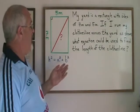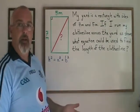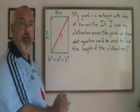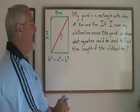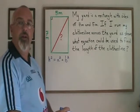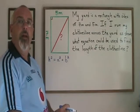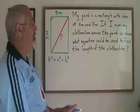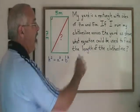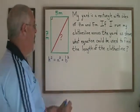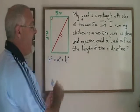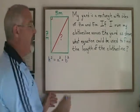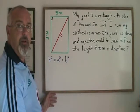This Pythagorean theorem situation is similar. I am not being asked to find the answer. I am being asked to give a mathematical expression which is made equal to a variable, and that variable should represent the length of the clothesline. Let's move on and solve the situation using the Pythagorean theorem so that we can see what the answer would look like.